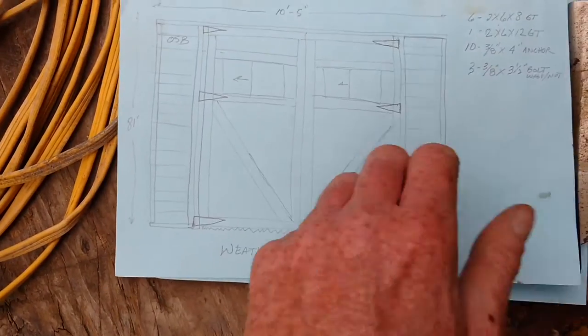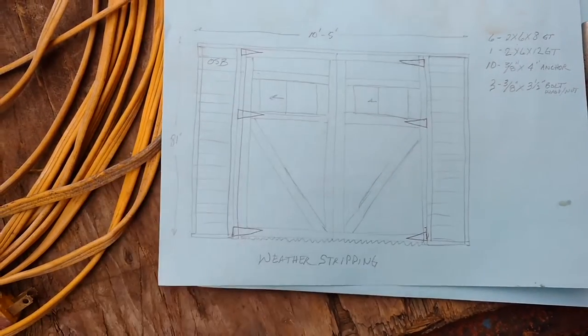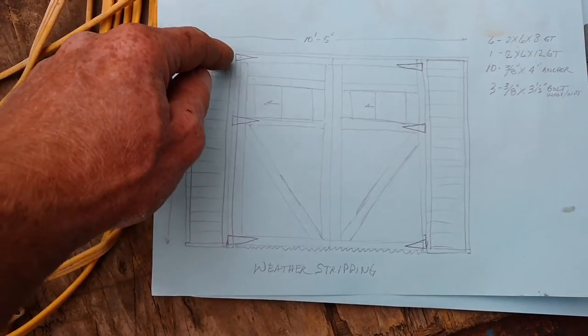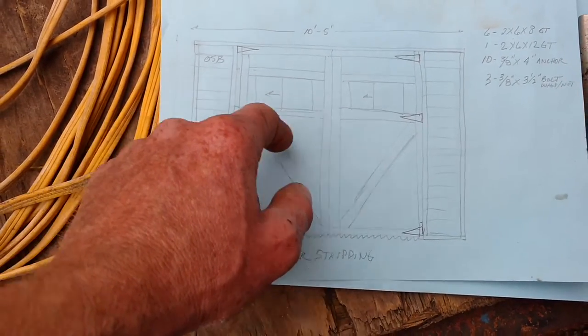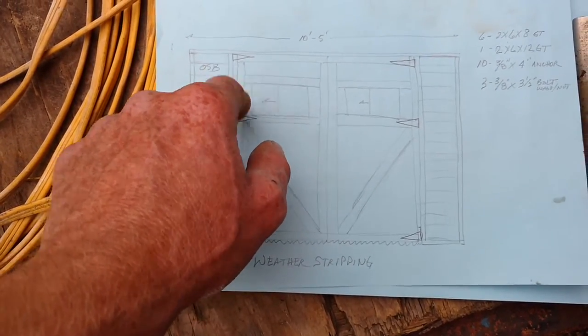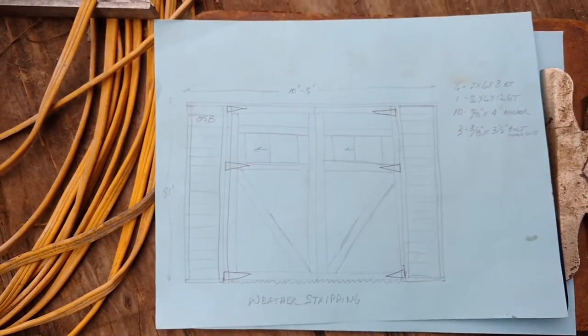I am going to take, and as far as trim goes, I'm going to go ahead and try to dress this up just a little bit and use 1x4 material and just put some 1x all the way around the outside and then just try to polish it up a little bit to make it look good.